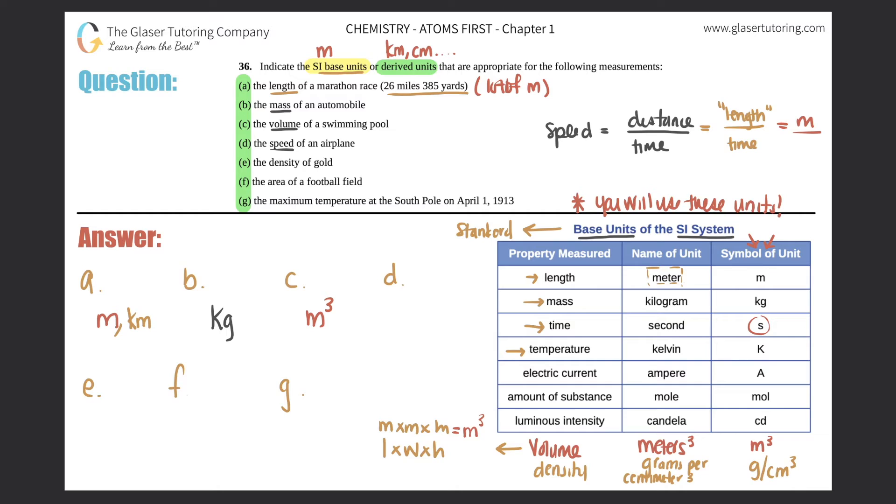So the SI unit for speed would be meters per second. Next one, e, the density of gold. Now we know that the standard unit for density is grams per centimeter cubed.